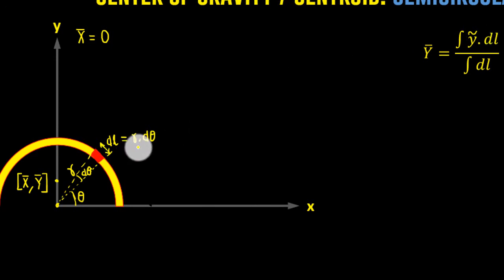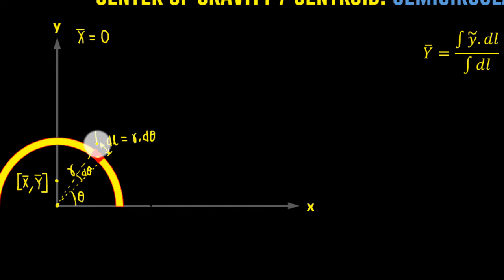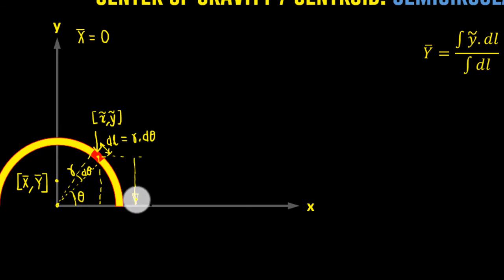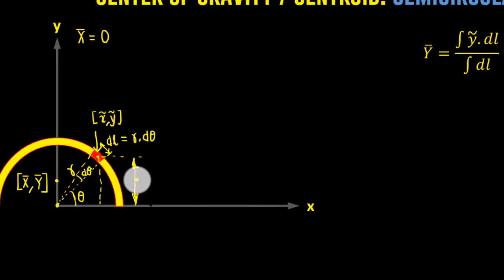Now, what about ȳ (y-noodle)? That is the coordinate of the centroid of the small element, having coordinates X̄ and Ȳ. What we are really interested in is the value of Ȳ. If the radius is R and the angle is theta, then the horizontal distance is R·cos(θ) and the vertical distance — that is Ȳ — is R·sin(θ).